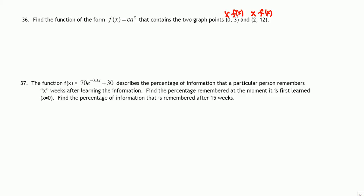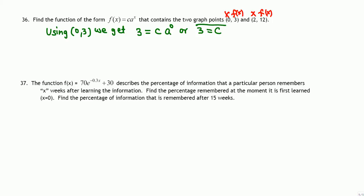Using the first point (0, 3), we get f(x) = 3 equals c times a raised to x. Since x is 0, a raised to 0 is 1, so 3 equals c times 1, which gives us c equals 3.